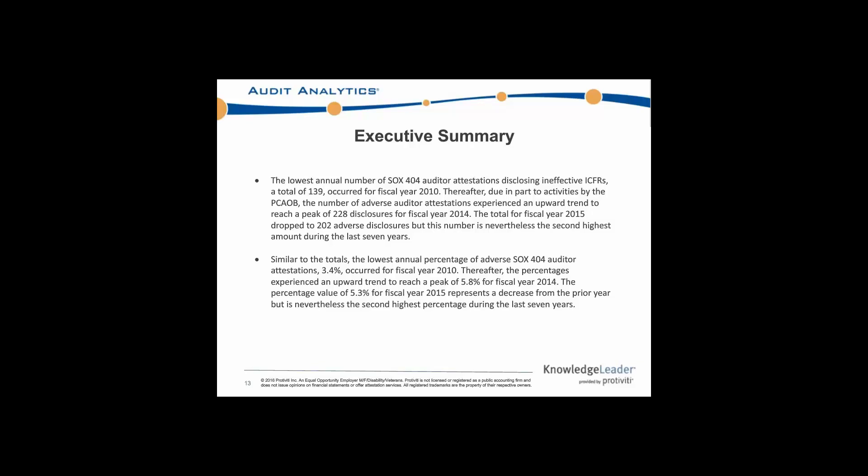Just some quick high-level bullet points. The lowest annual number of SOX 404 auditor attestations disclosing ineffective internal controls over financial reporting was 139, and that occurred in fiscal year 2010. Since then, the numbers have been slowly on the uptick through 2014, due in large part to activities by the PCAOB and more scrutiny. Similarly, the lowest percentage of auditor attestations disclosing ineffective ICFRs was also in 2010.